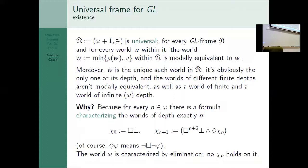So finally, what are the universal frames? If we look at precisely omega plus 1 with reverse containment, then we see that for every GL frame and for every world within it, there is a unique world w bar within that frame which is modally equivalent to w. So every world anywhere does have a unique representant in the universal frame. Of course, it works only in closed fragments.